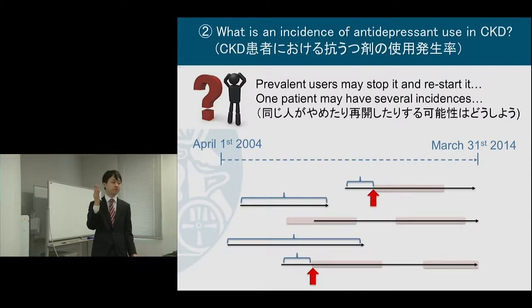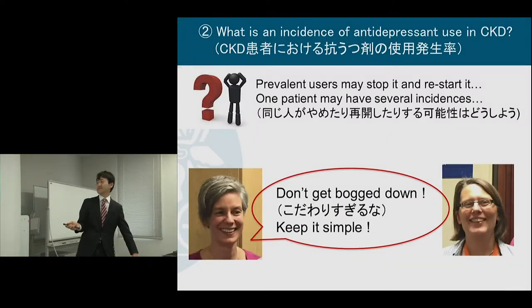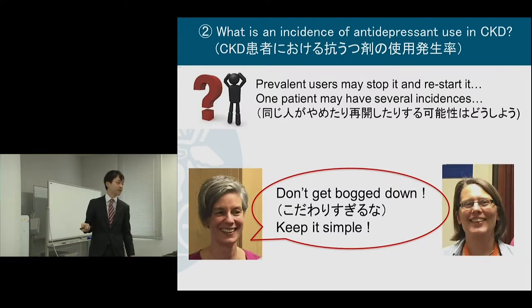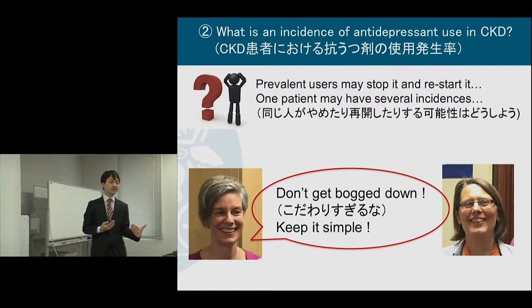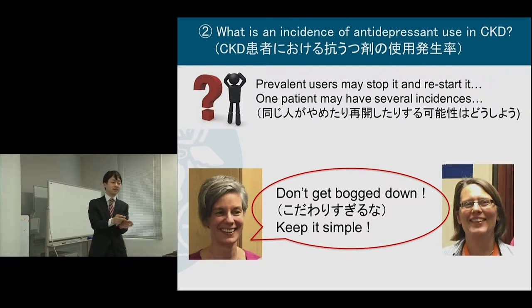Of course it depends on the type of outcome and drugs. I wondered whether I should count one per patient or several per patient. My supervisors — nephrologists, and Ian who was on my advisory committee — gave me good suggestions. They often asked very useful questions because I tend to get bogged down too much. I wanted to achieve 100%, but she often suggested not to spend too much time on small differences. So I decided one patient could have only one incidence, and I stopped observation after that.